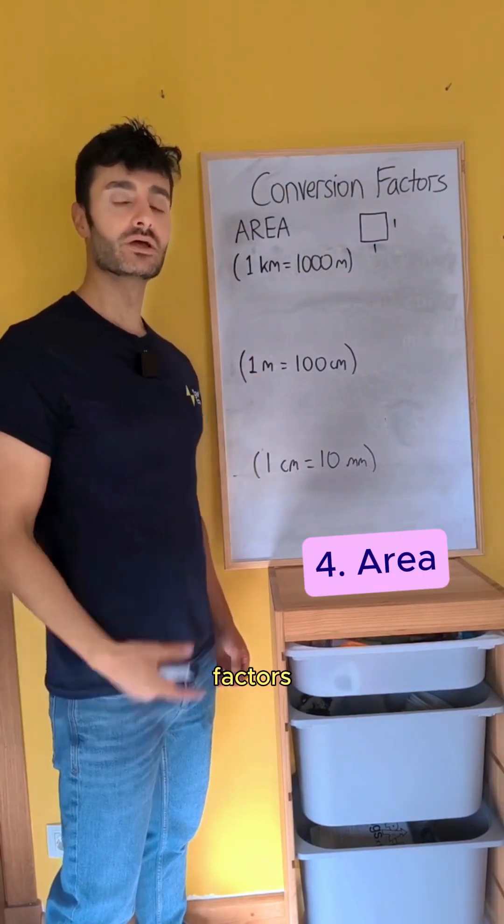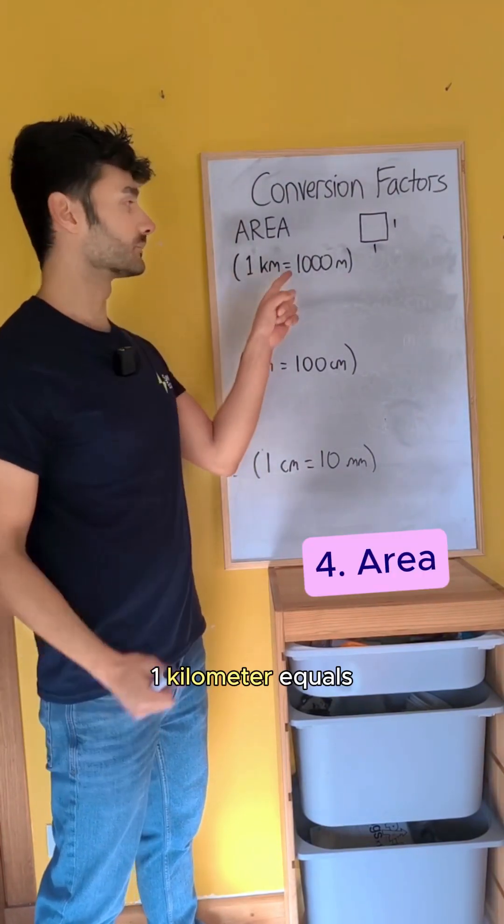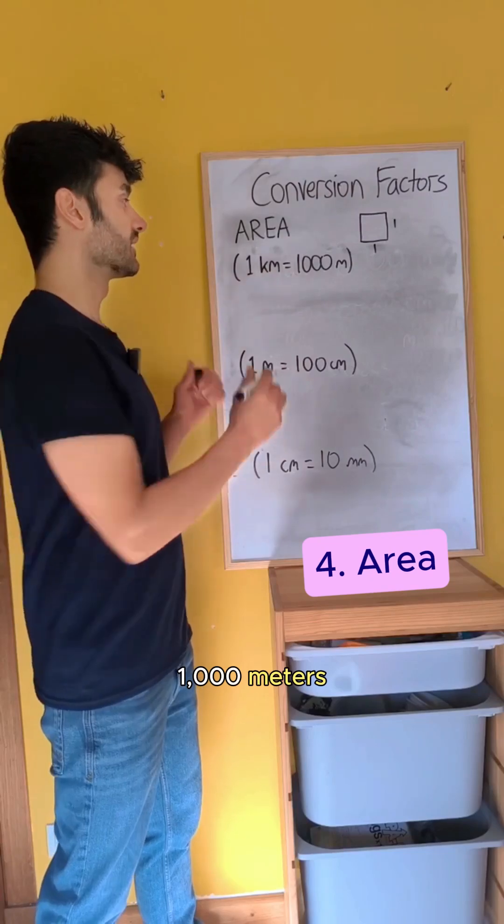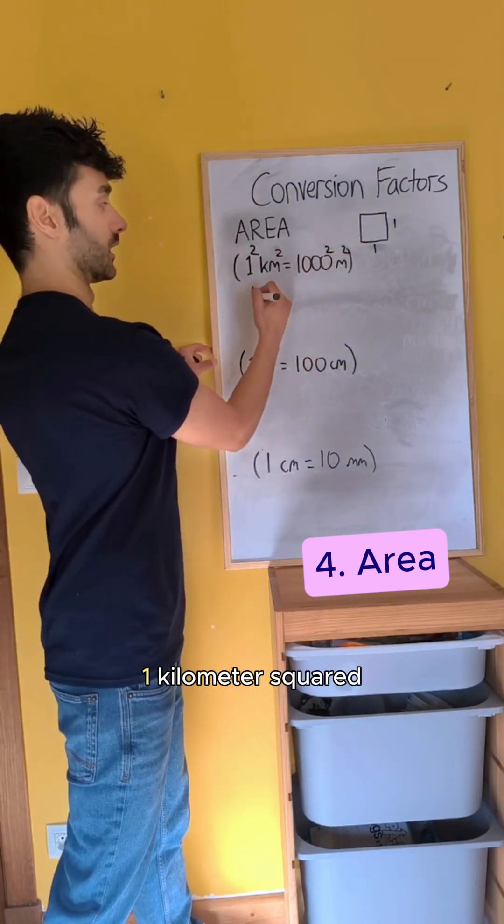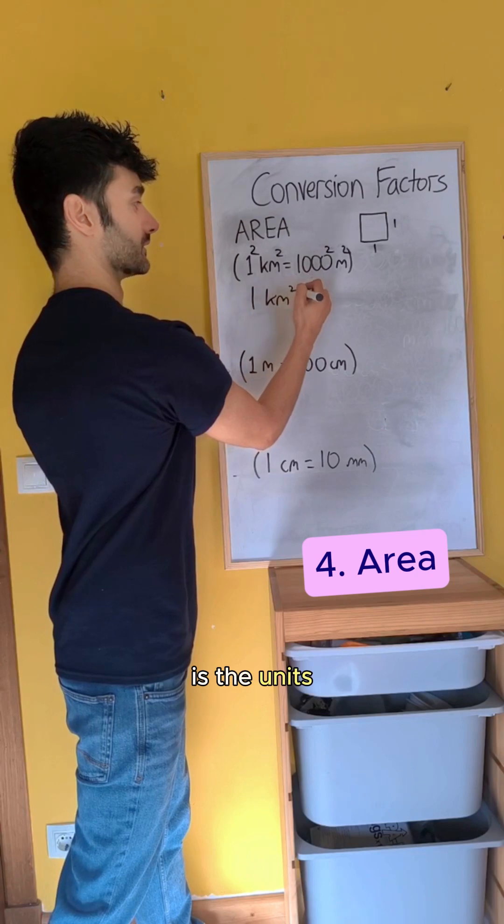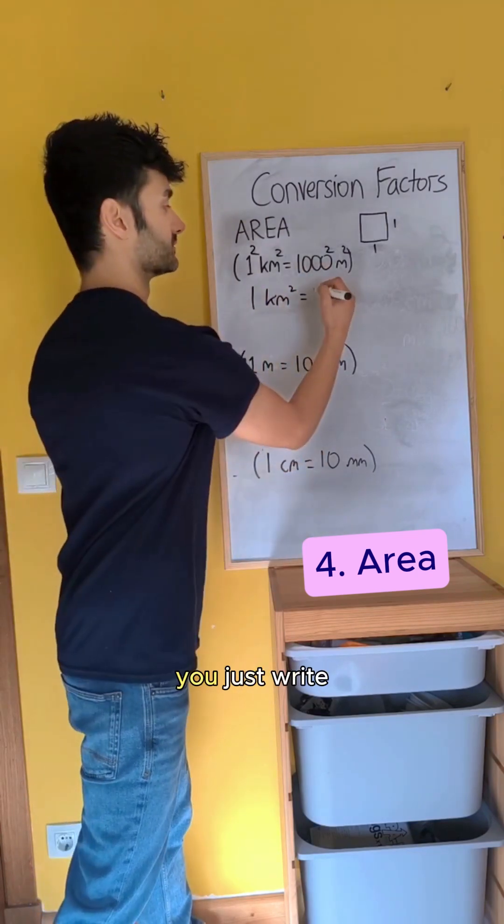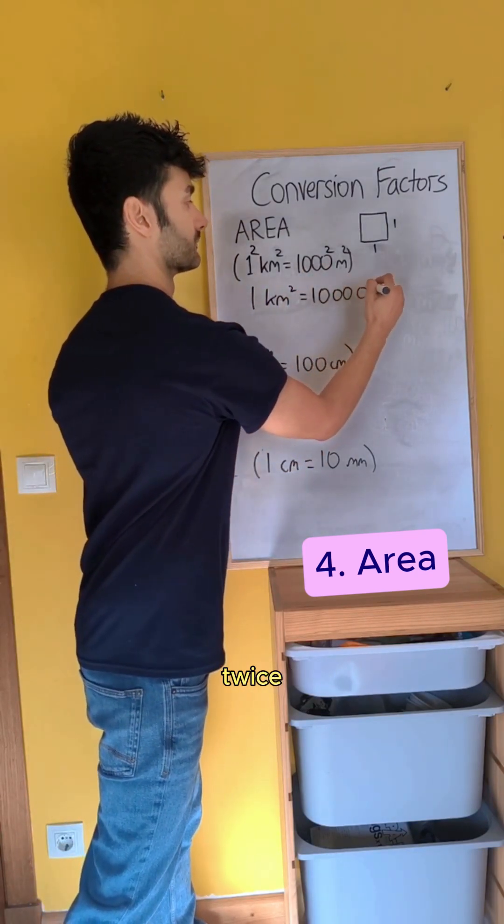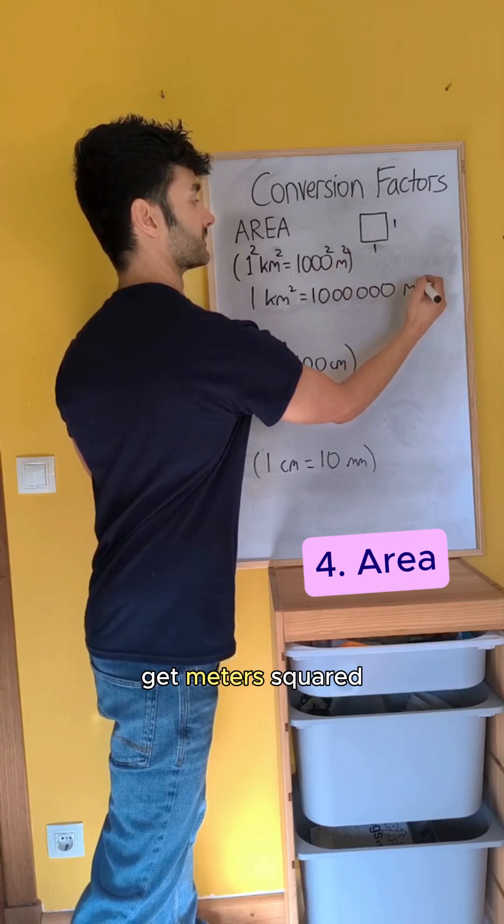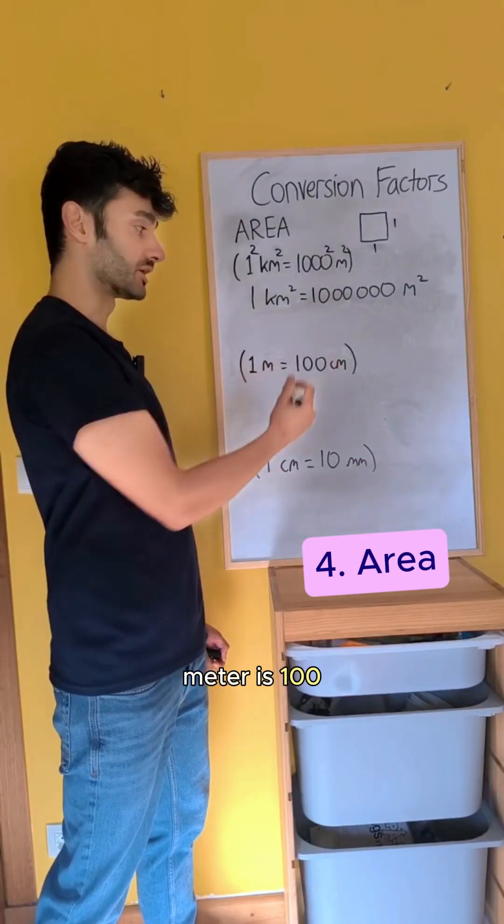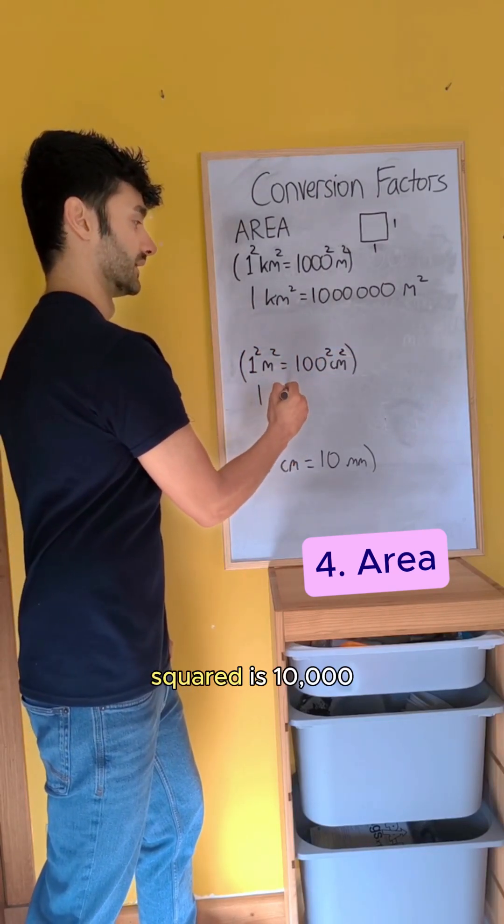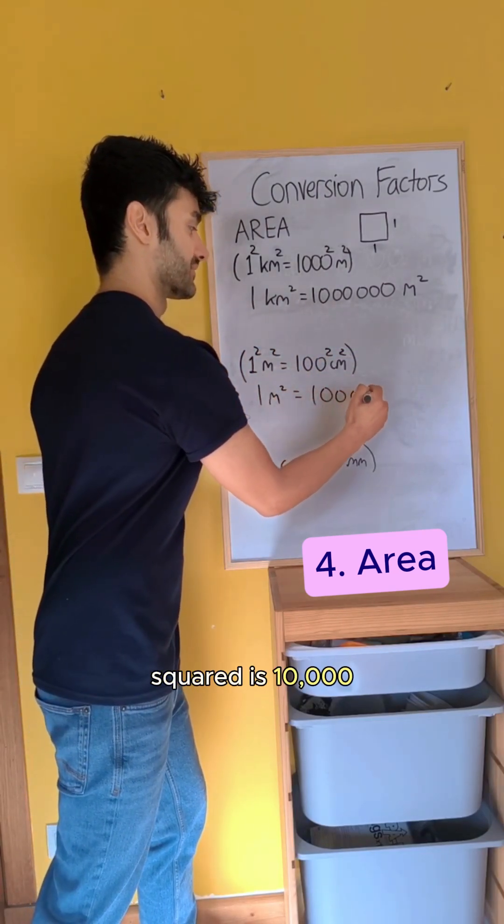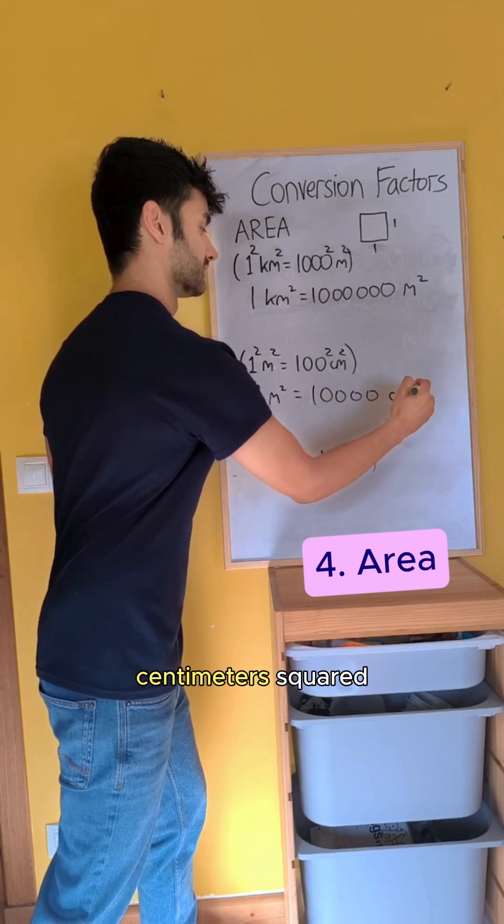Next, area scale factors. The way I remember is I write one kilometer equals a thousand meters, then I just square everything. One squared is one. Kilometers squared is the units. A thousand squared, you just write the zeros out twice, and then you get meters squared. In the same way, if one meter is a hundred centimeters, then one meter squared is ten thousand centimeters squared.